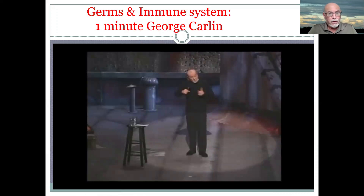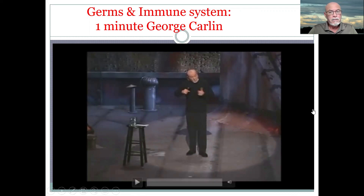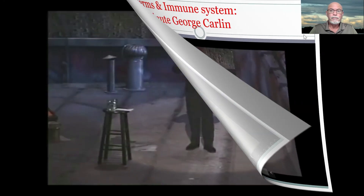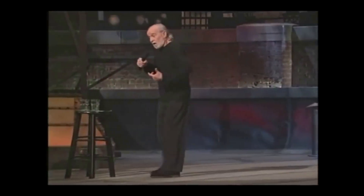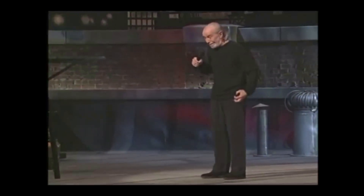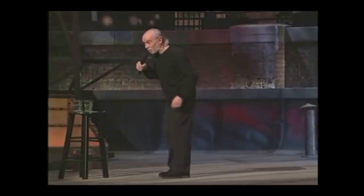Now George Carlin will tell you what germs and the immune system can do — it's funny. You think you have an immune system just for killing germs, but it needs practice — it needs germs to practice on. If you kill all the germs around you and live a completely sterile life, then when germs do come along you're not going to be prepared. When some super virus comes along that turns your vital organs into liquid, you're going to get sick and die because you have a weak immune system.